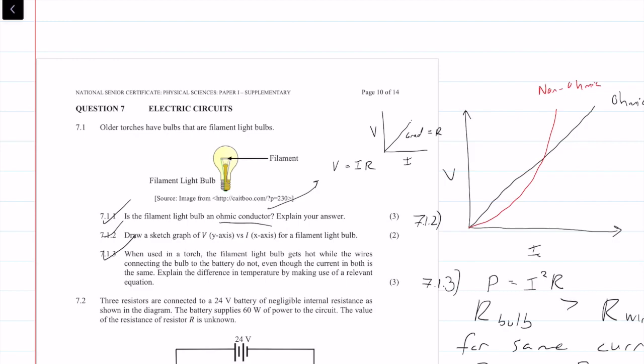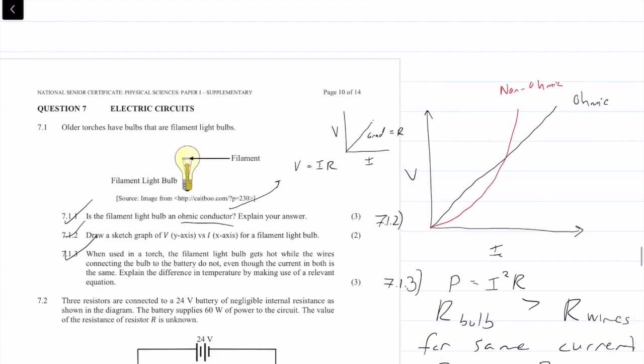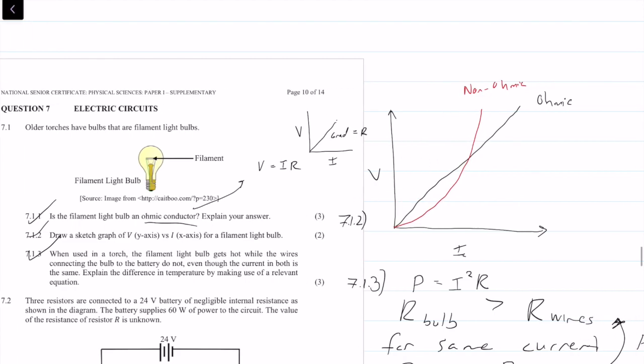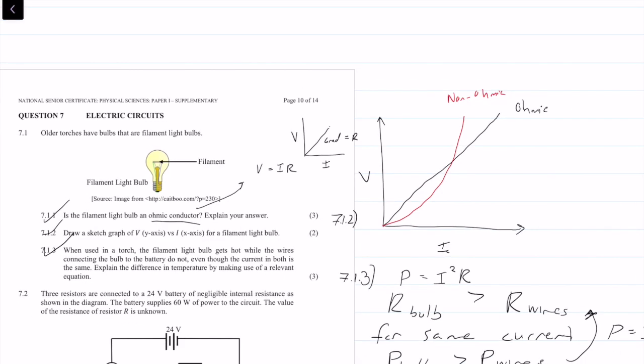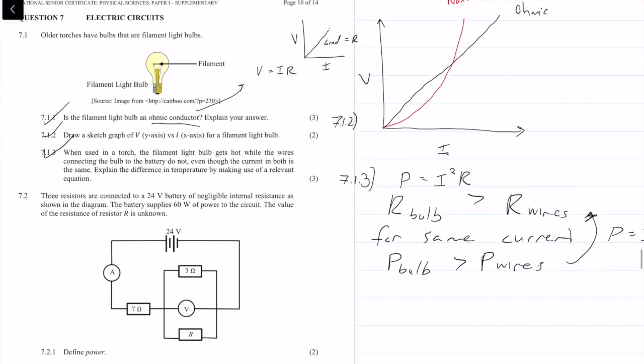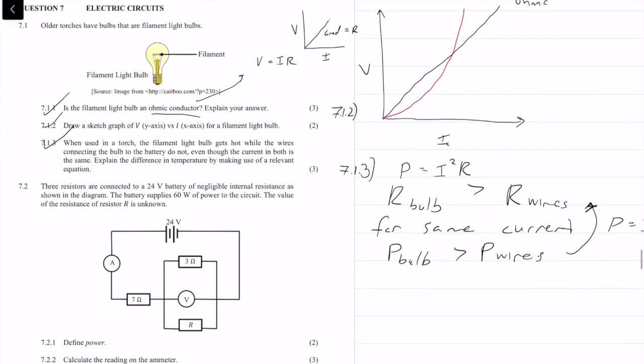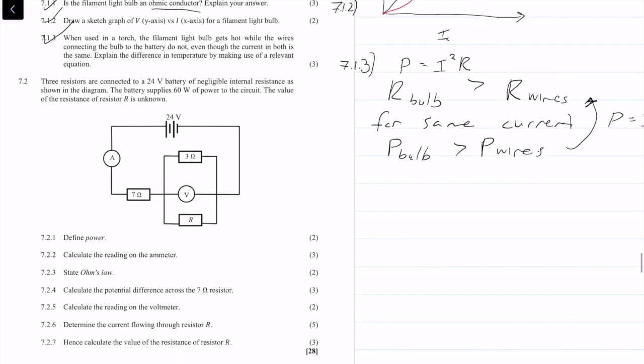The heat dissipation P equals I squared R means that since the resistance of the bulb is greater than the resistance of the wires, for the same current, the power or heat loss for the bulb will be greater than that of the wires.